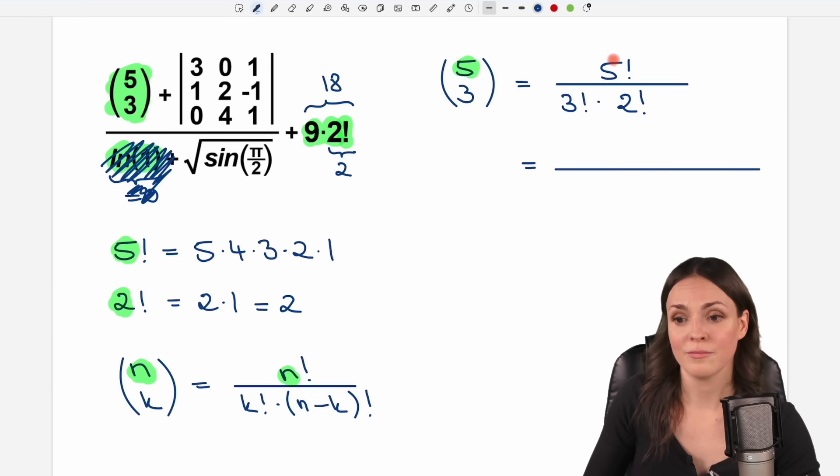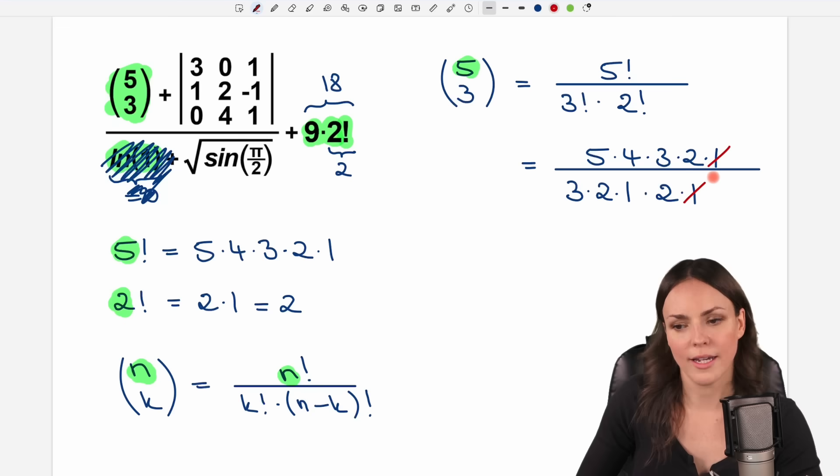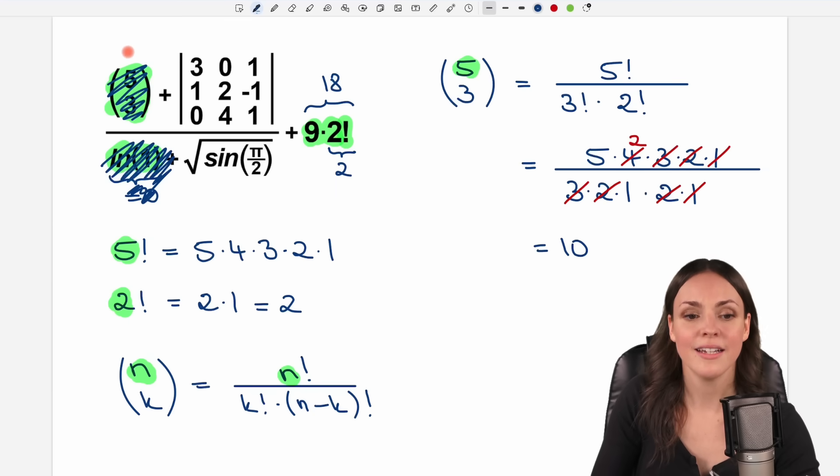Let's calculate this thing. 5 factorial, we start at the 5 and multiply down to the 1. 3 factorial, same thing, but we start at the 3. 3 times 2 times 1. And 2 factorial, we already had that, we start at the 2 and times 1. Now we can cancel some things out here. We can reduce 4 over 2, which equals 2. So in total, we only have 5 times 2, which gives us 10.